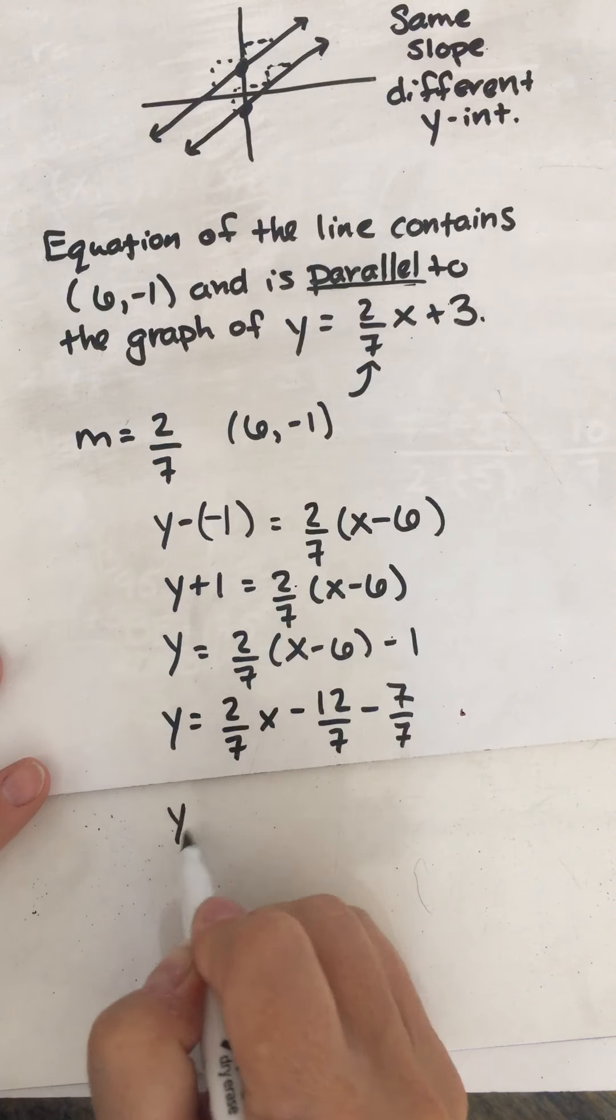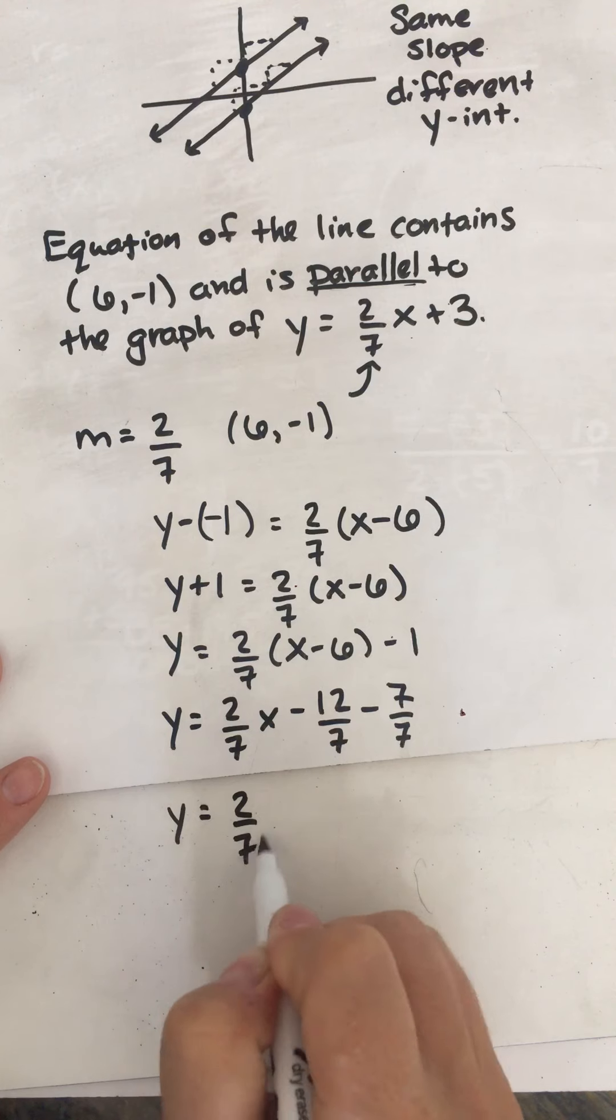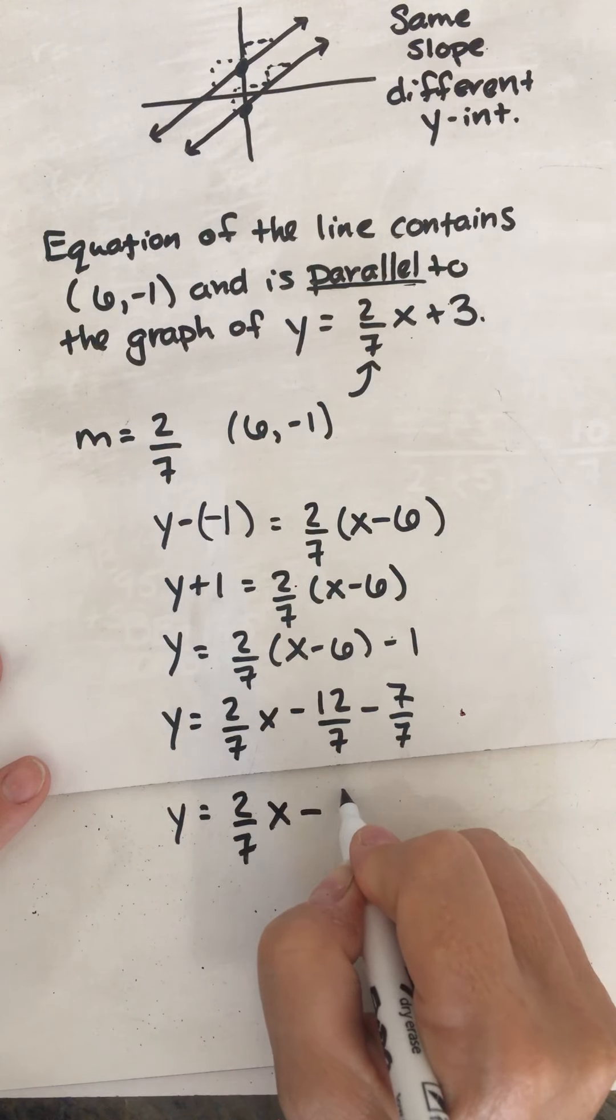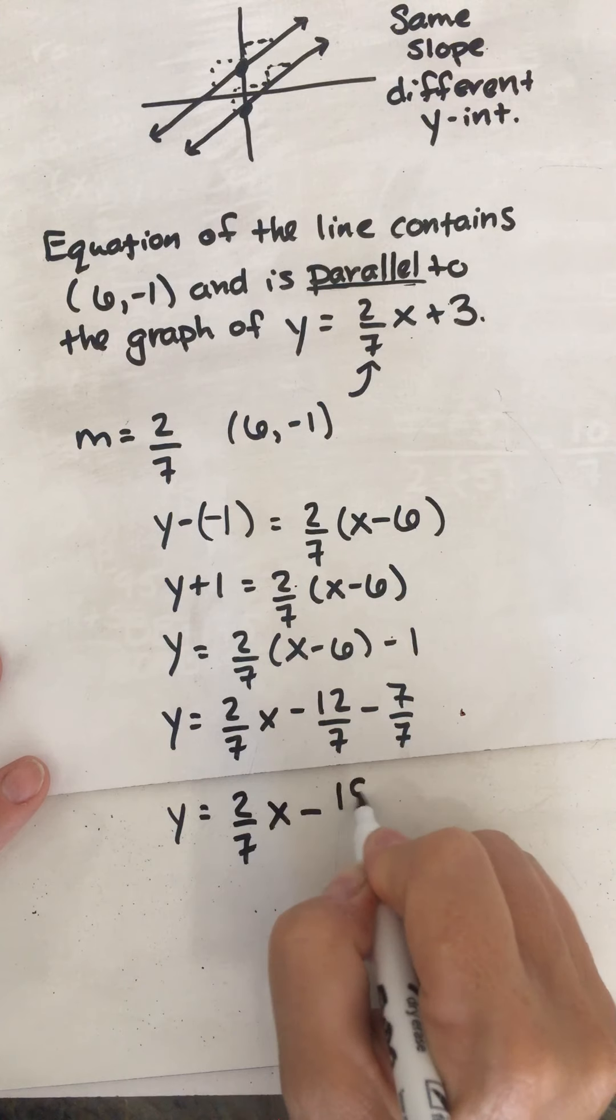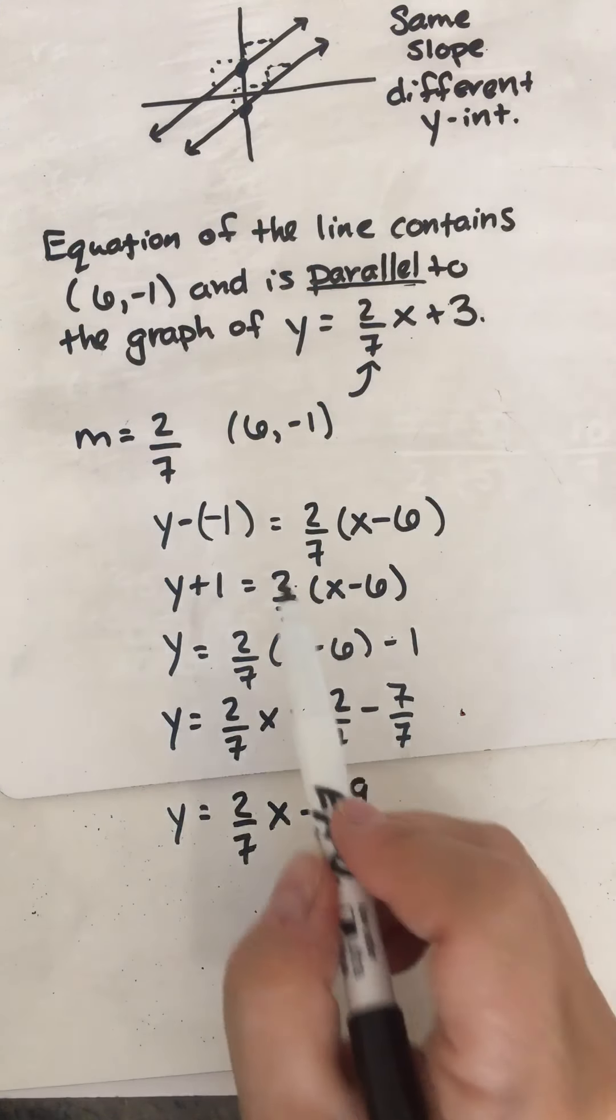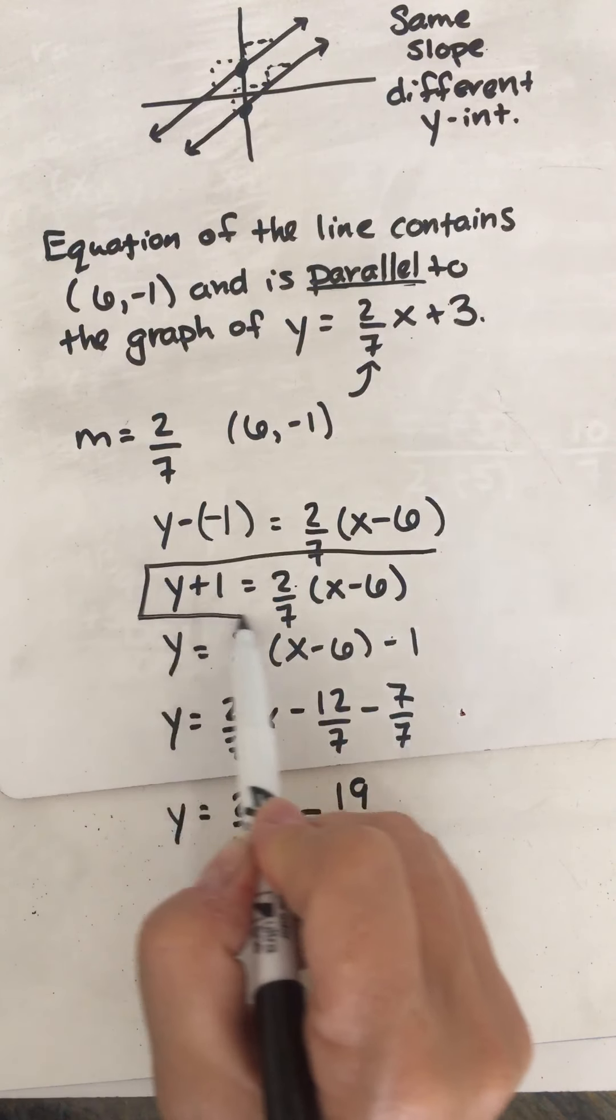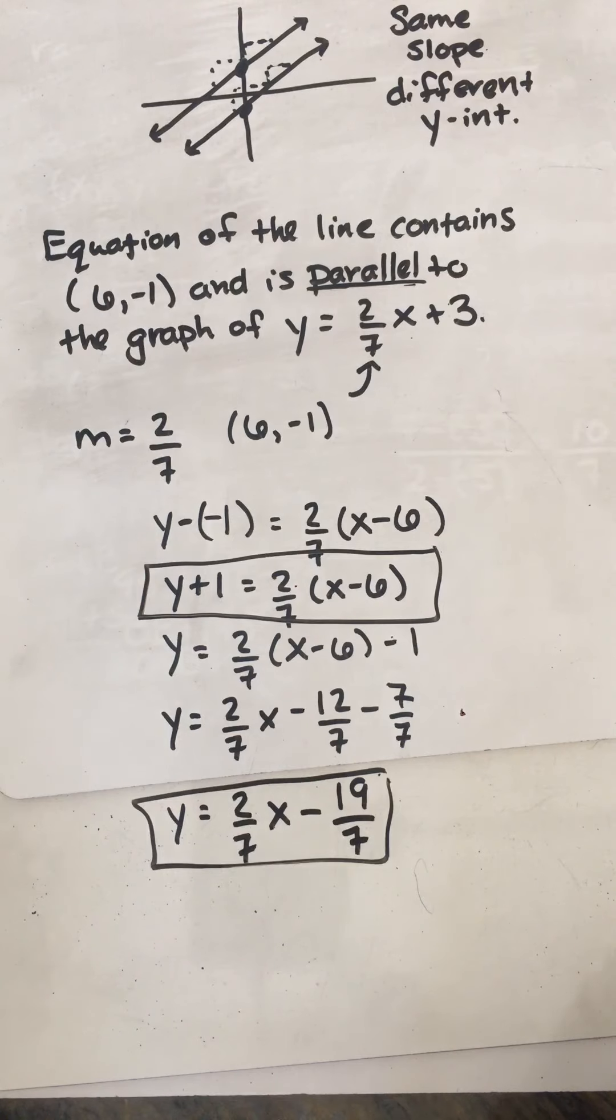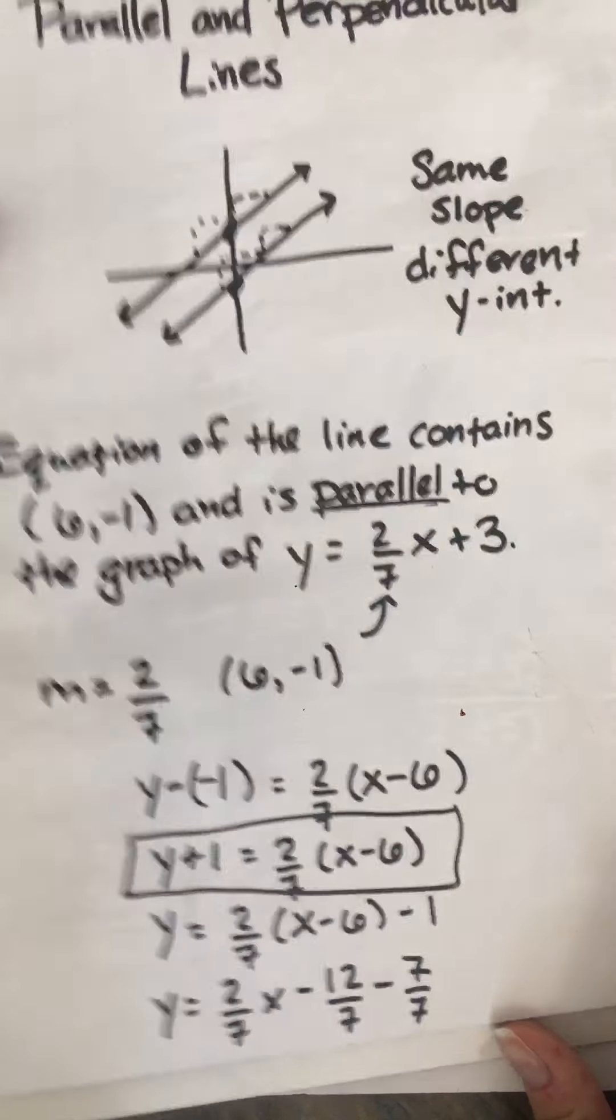So I've got y = 2/7x minus, that'll be 20, no, it'll be 19/7. So that would be, here's the point-slope version of the equation. Here's the slope-intercept version of the equation. So that's parallel. Let's briefly discuss perpendicular. Similar idea.